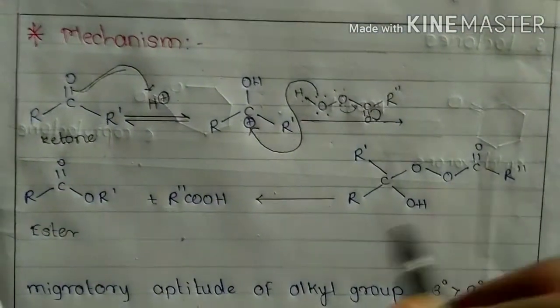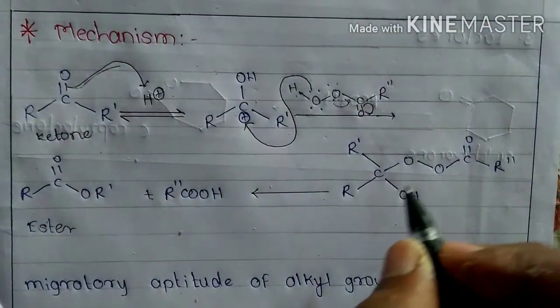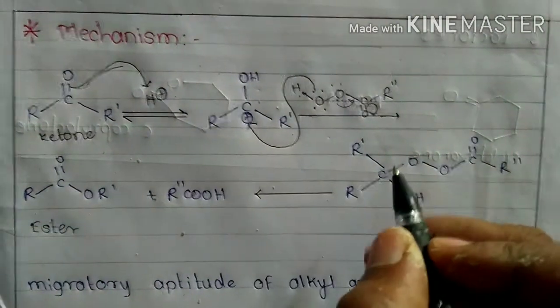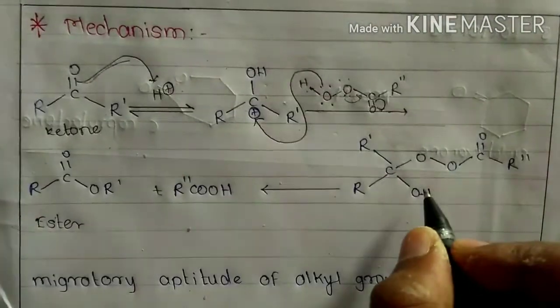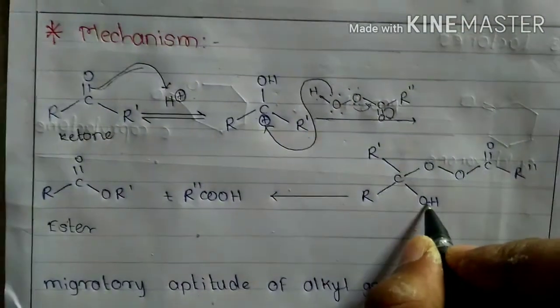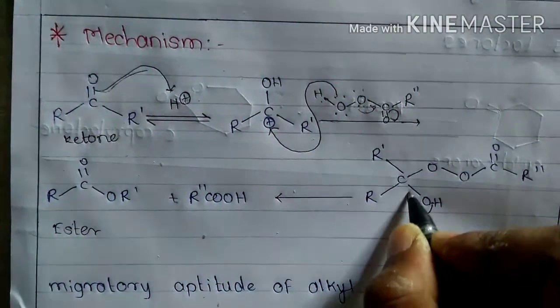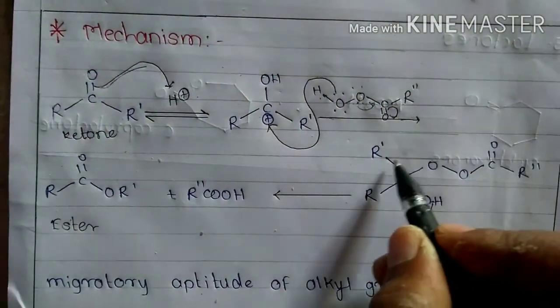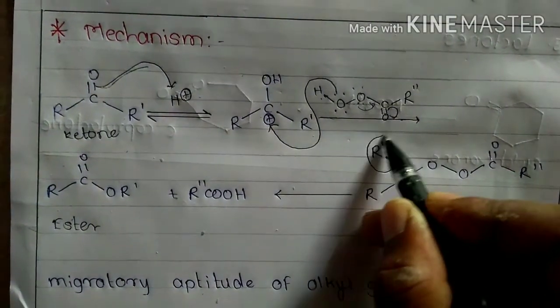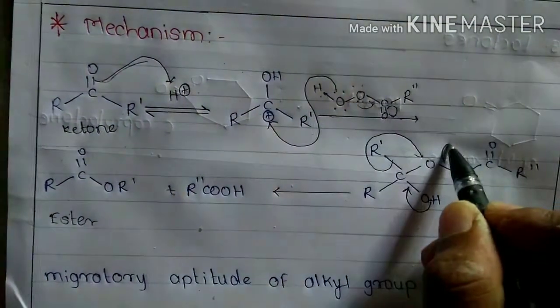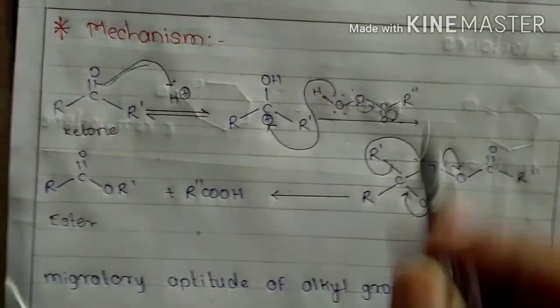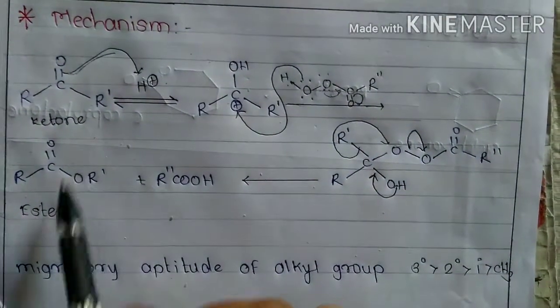So here is the formation of our intermediate, then the formation of ester is a concerted mechanism like this. This R' group goes here and the removal of carboxylate anion takes place like this.